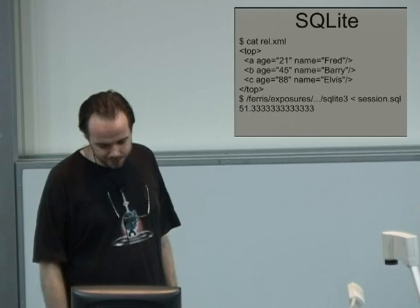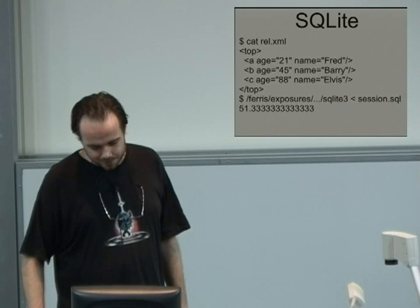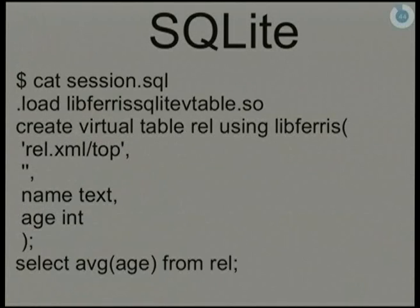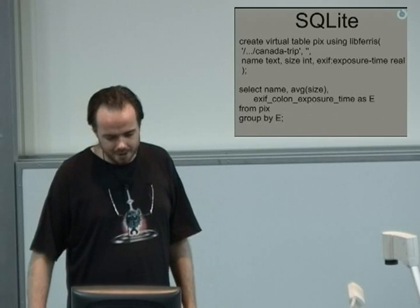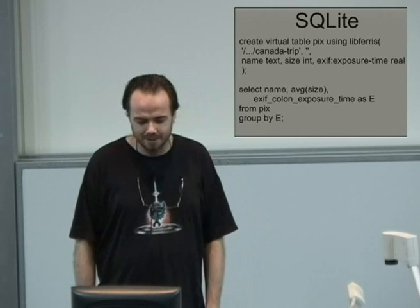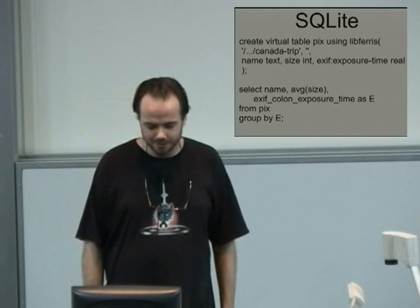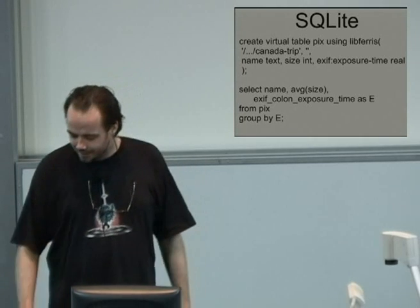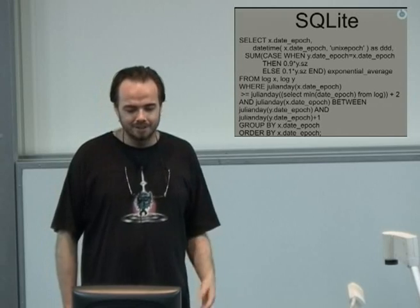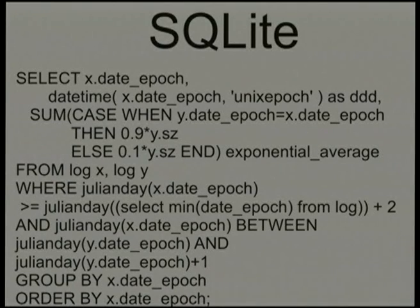For SQLite: you can take a small XML file, load the VTable file, create a virtual table in SQLite using LibFerris, tell it you want the top element of that XML file, specify attributes and their types, and get back results — for example, I've selected the average age from the virtual table and got 51.3. If you have a bunch of image files and want to graph them relative to group by aperture size or group by exposure time, this is a handy way to do that. You can do any SQL-style query once you've got the data available through SQLite.